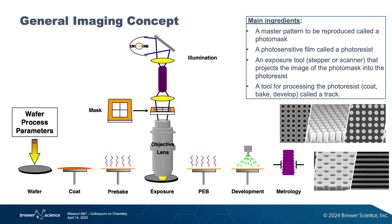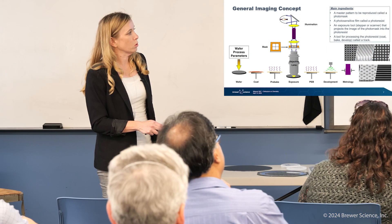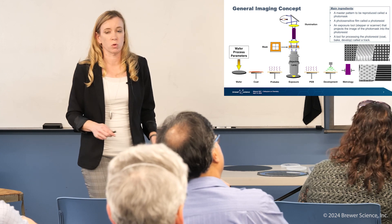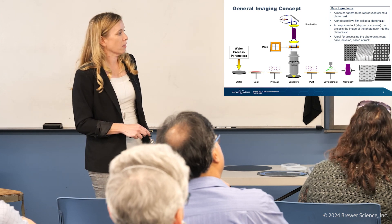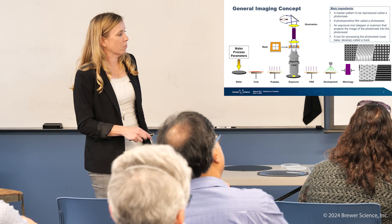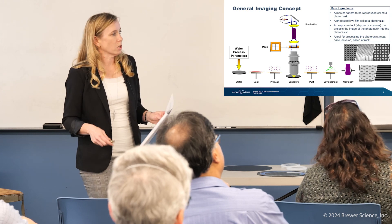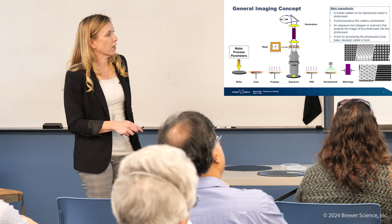And then we use a photosensitive film called a photoresist. It's a chemical that, when exposed to light, undergoes some chemical change — the chemists in the group will get that. We have an exposure tool — this is the light source that projects the image from the mask onto the actual photoresist. And then we go through a tool usually called a track, that processes all of this and does the final baking, metrology, all the stuff that we have to do.